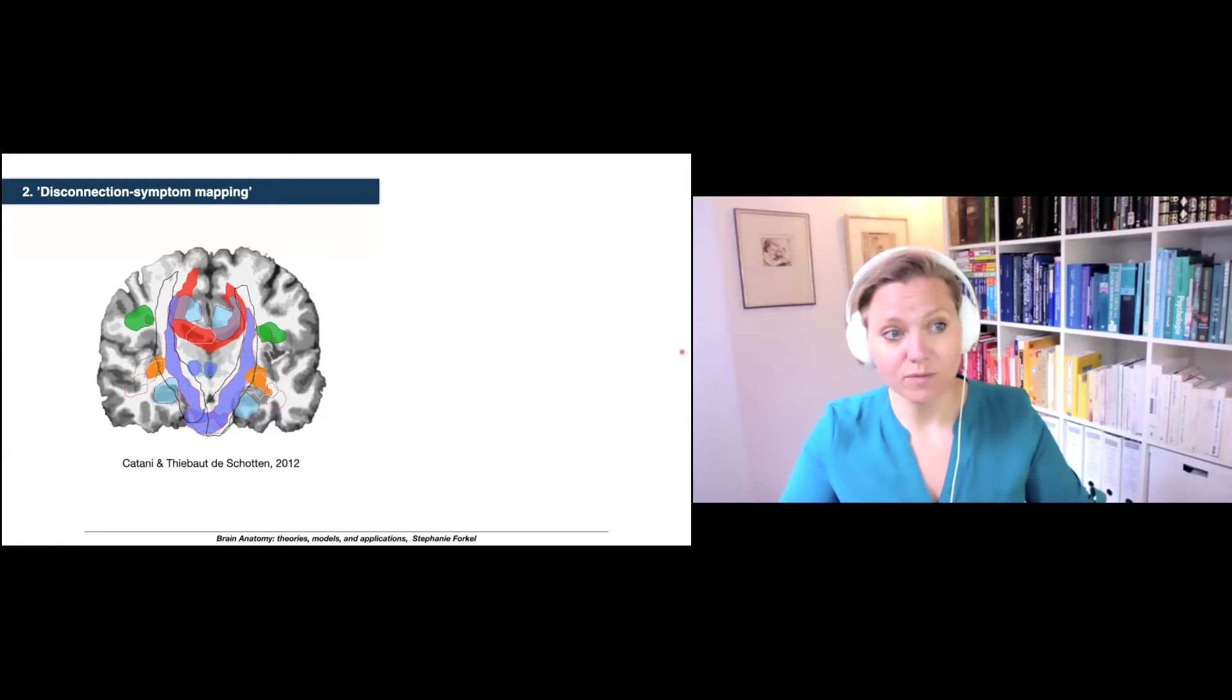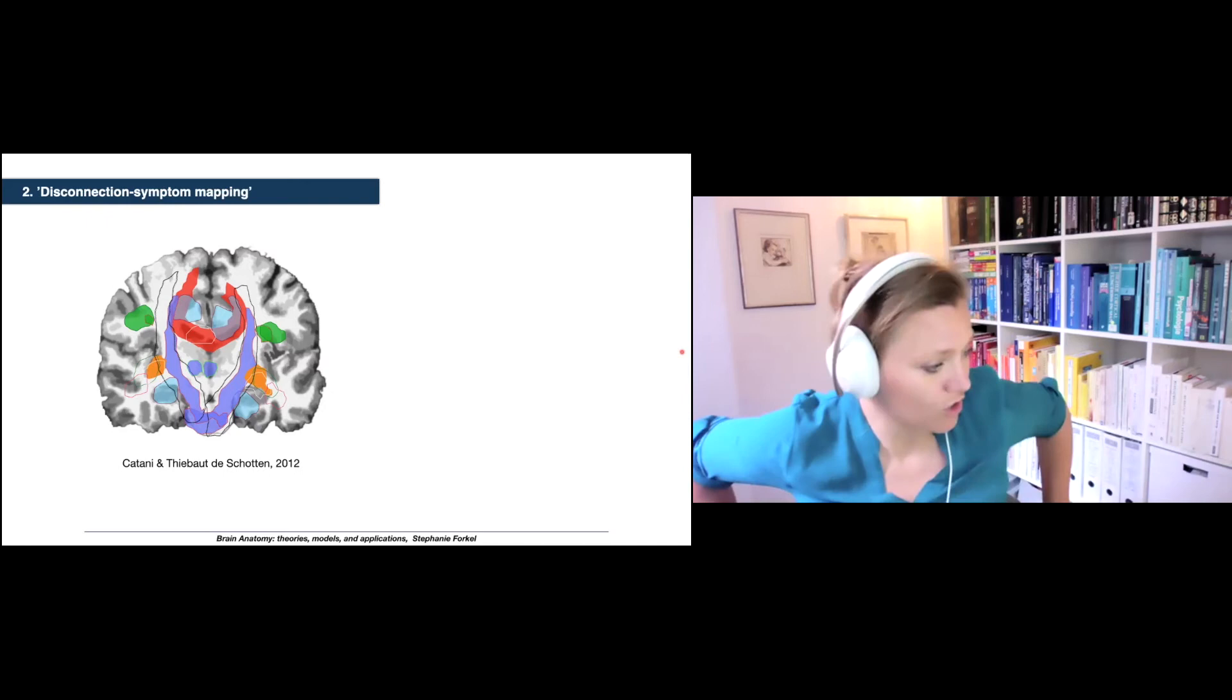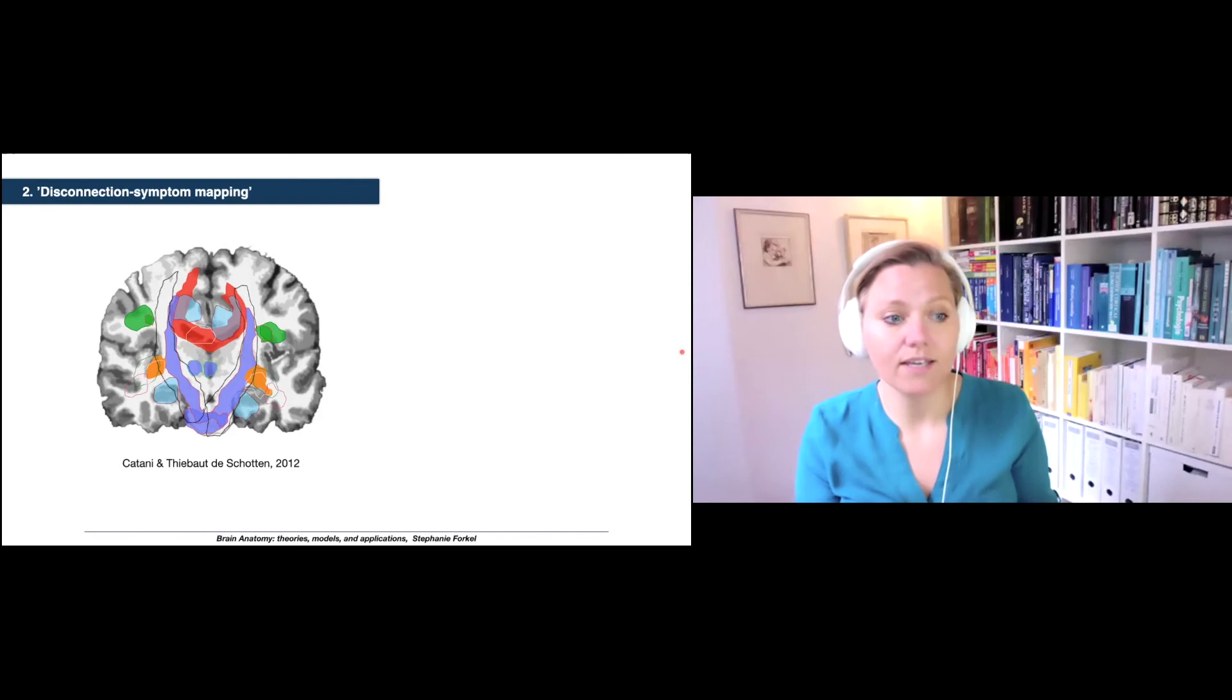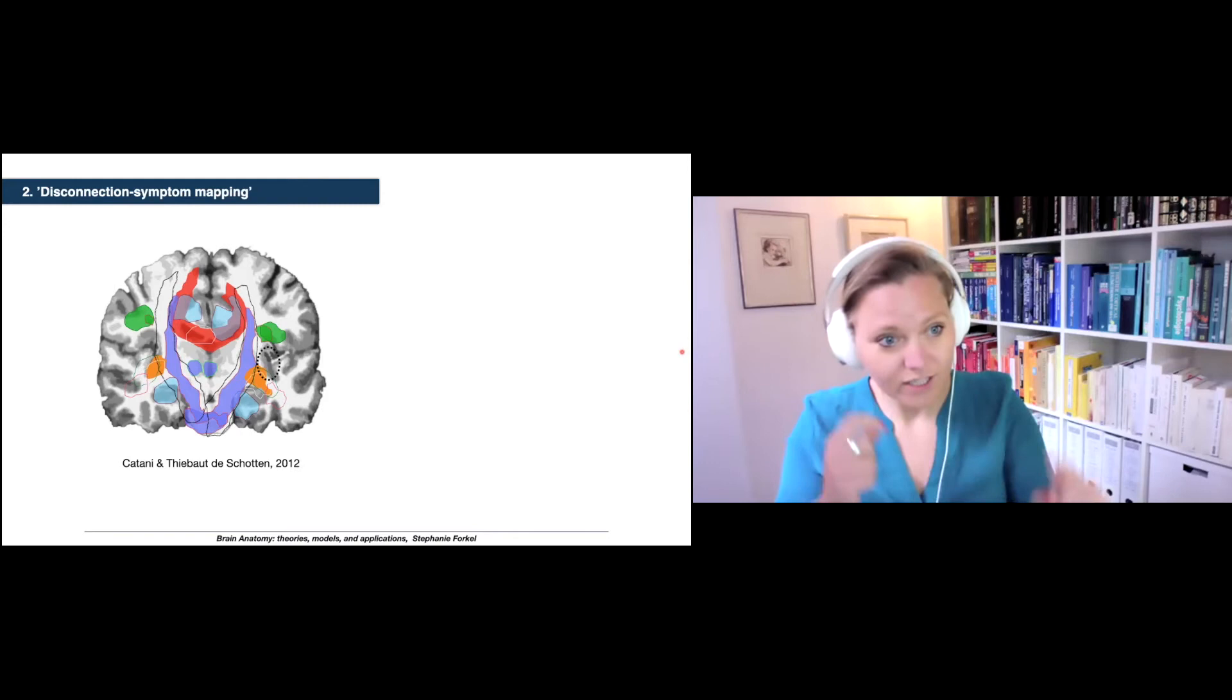The second point I want to make is that we can, once we identify the tracts, map symptoms onto tracts. The example I want to give you here is imagine a lesion on the insular cortex. I'm just going to put it here so you roughly know where the insula is. The insula, for those of you who've never heard of it, if you can see me, this is the lateral surface. If you open the Sylvian fissure, the insular cortex is just hidden in there.